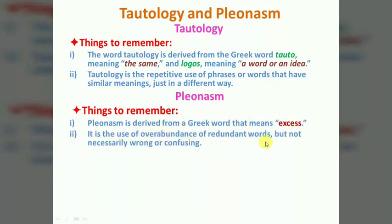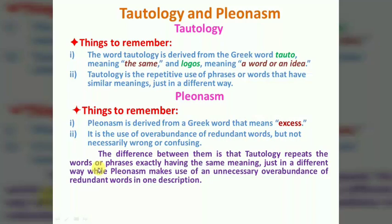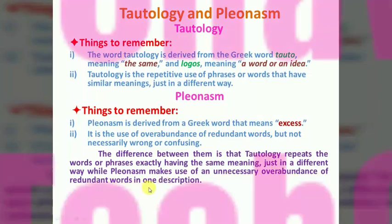Tautology involves the use or abundance of redundant words, but is not necessarily wrong or confused. The difference between Tautology and Pleonasm is that Tautology refers to words or phrases having exactly the same meaning just in a different way, while Pleonasm makes use of unnecessary or abundant redundant words in a different way.